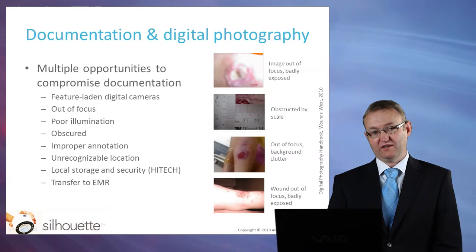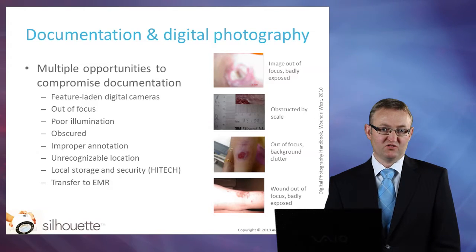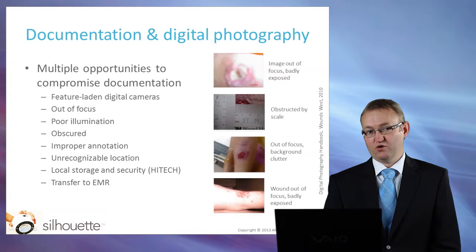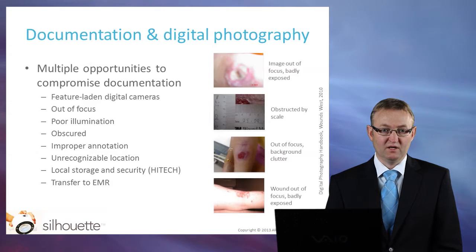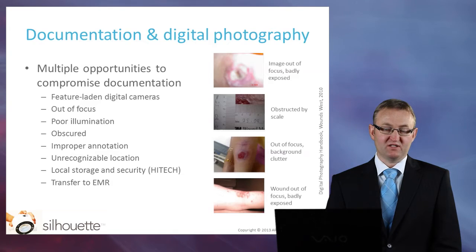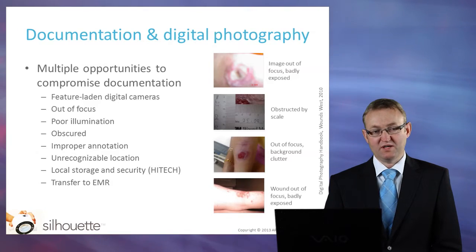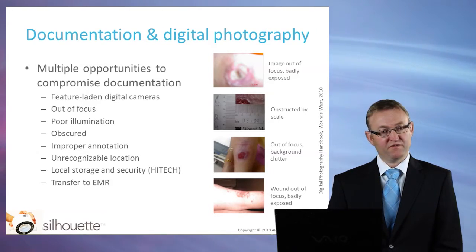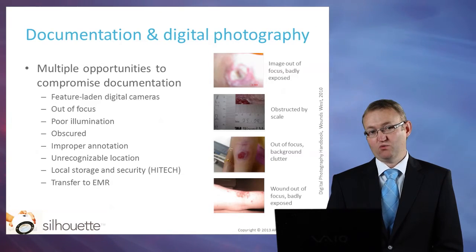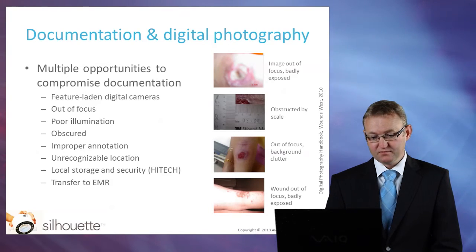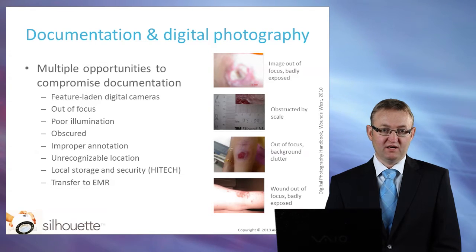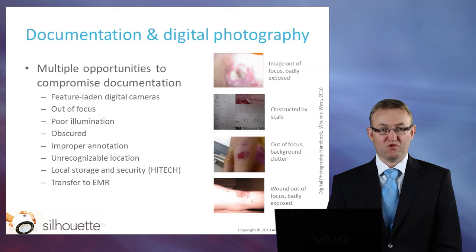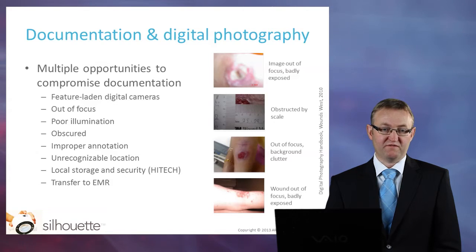However, there is one important aspect that digital planimetry brings that other techniques do not, and that is the fact that at the same time a digital image is being acquired. A digital photograph of a wound is an important part of wound documentation. One of the problems though is that the modern digital camera is absolutely feature-laden, and it is so easy to not get a good digital image — the image may be out of focus, it may be poorly illuminated, or the wound may even be obscured by a target. There is also the very practical problem of storage of the images, which raises security and privacy issues, and also the practical issues of attaching the photographs to an EMR.